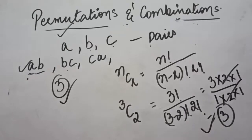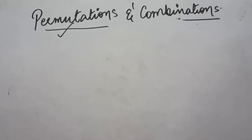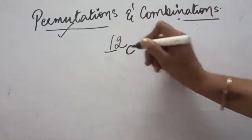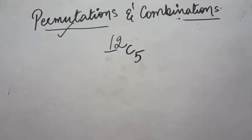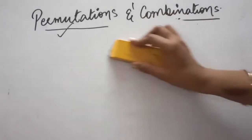Another question students have is where to apply permutations and combinations. One clue: apply these concepts in questions where you are drawing balls or cards simultaneously — for example, drawing 5 balls at once from 12 balls. When things are done simultaneously, permutations and combinations give perfect answers. If drawing is done one by one, you can also apply simple probability concepts, but for simultaneous draws, permutations and combinations are ideal.